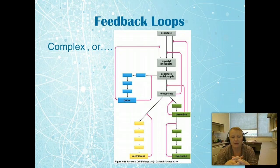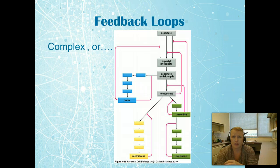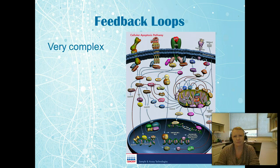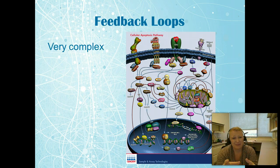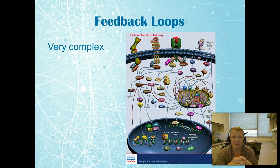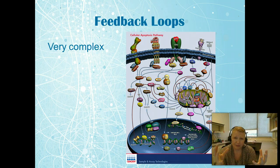Feedback loops can get much more complicated. For example, cells determine which amino acids need to be produced, with different signals determining how the process flows — these are mostly negative feedback loops. There are also very complex examples, such as in cellular apoptosis pathways, where things that are turned on will turn others off, and vice versa.